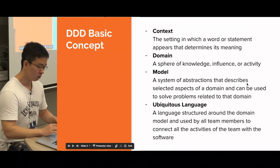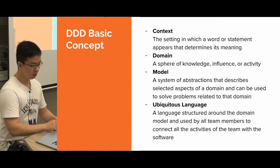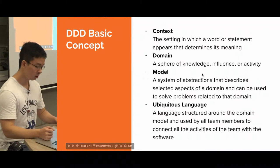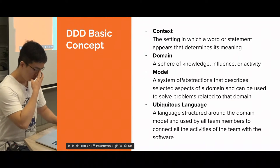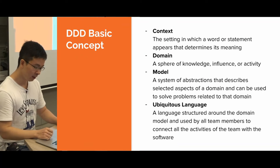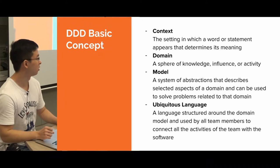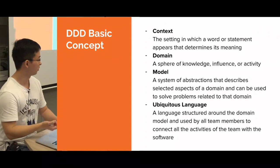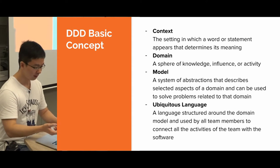Next is domain. Everyone knows domain means different areas of a project - what it is in the real world - for example a financial domain or HR domain. Next is model: a system of abstraction that describes selected aspects of a domain and can be used to solve problems related to that domain. But for us developers, model means schema. For the domain expert, it means the real world object. For simplicity, when we talk about model today, I'm talking about schema.